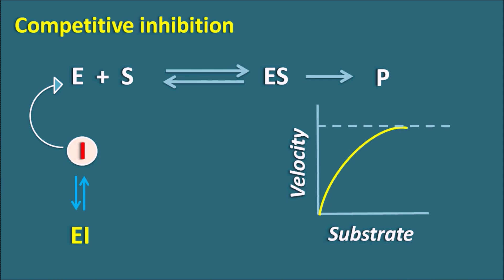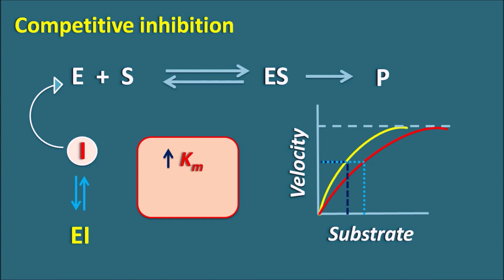In the presence of inhibitor, we observe a different plot. Vmax is not reduced, but Vmax is achieved at a higher concentration of the substrate. As the substrate concentration increases, the effect of the inhibitor is reduced, and Vmax can be achieved at a higher substrate concentration. So in competitive inhibition, there is no change in the Vmax value. However, the Km value is increased in the presence of inhibitor. So in competitive inhibition, Km value is increased but Vmax is not changed.